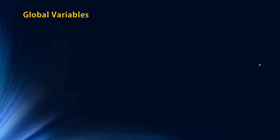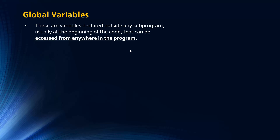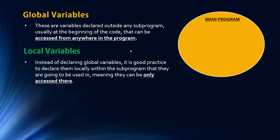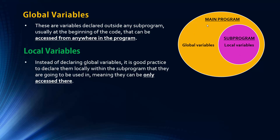Now, global and local variables. A global variable is declared outside of any subprogram, usually at the beginning of code, and can be accessed from anywhere in the program. By contrast, a local variable is declared locally within a subprogram, meaning it can only be accessed within that subprogram. In a diagram, the large circle represents the main body of code and the smaller one a subprogram — global variables have global scope accessible everywhere.